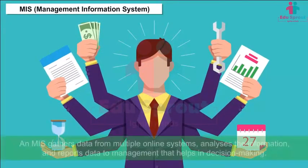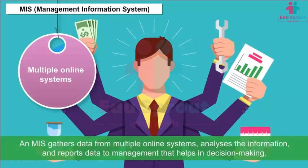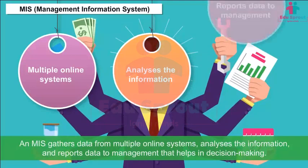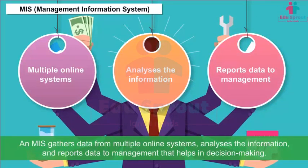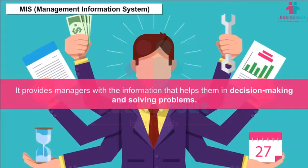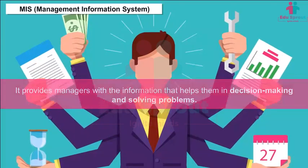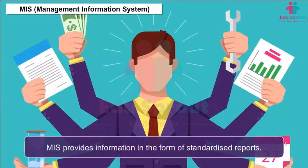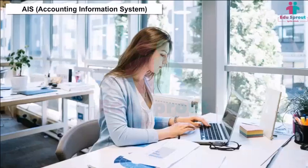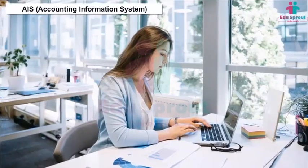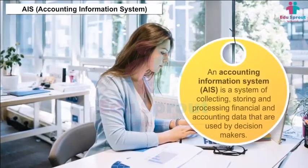MIS — Management Information System: An MIS gathers data from multiple online systems, analyzes the information, and reports data to management to help in decision making. It provides managers with information that helps them in decision making and solving problems. MIS provides information in the form of standardized reports.